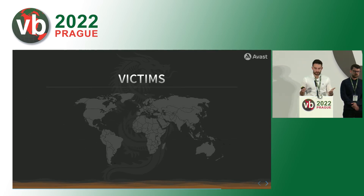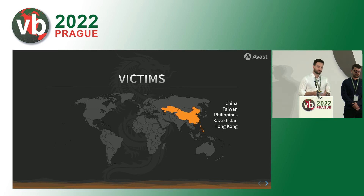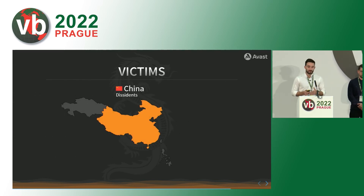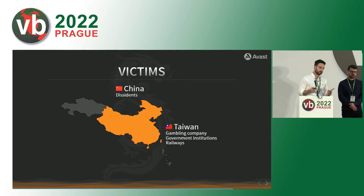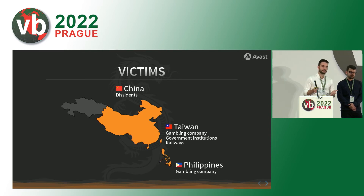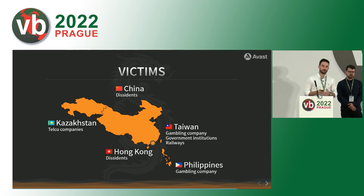That was our technical analysis of the binaries. Now we're going to talk about the victims. So far we found victims mostly located in Asia — specifically dissidents in China, online gambling companies in Taiwan, government institutions and railways, a gambling company in the Philippines, telecom companies in Kazakhstan, and dissidents located in Hong Kong.